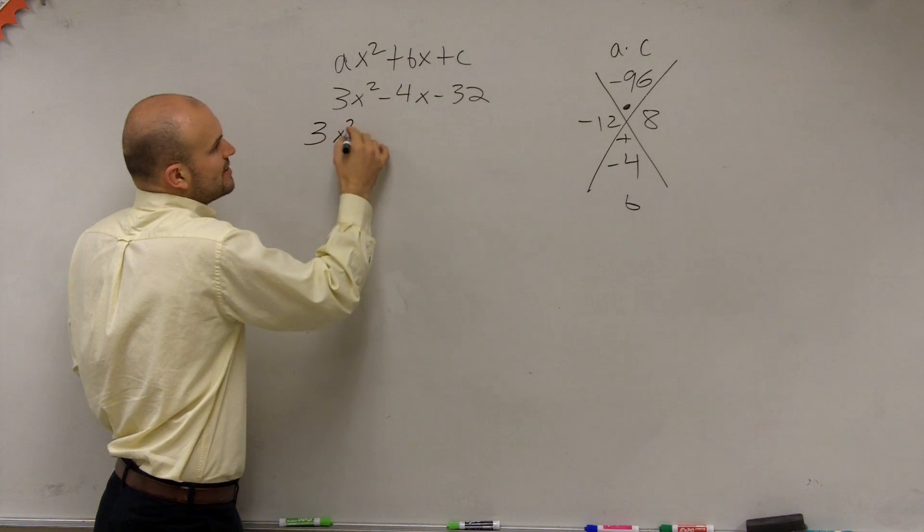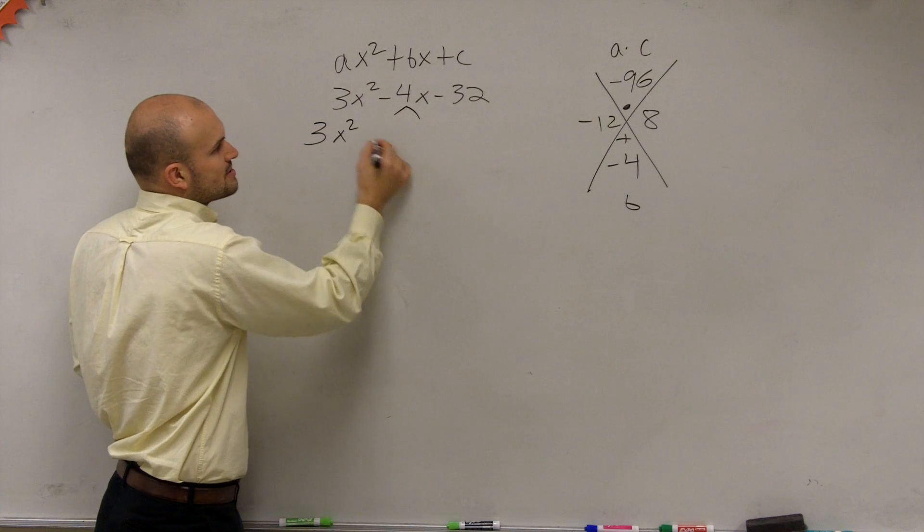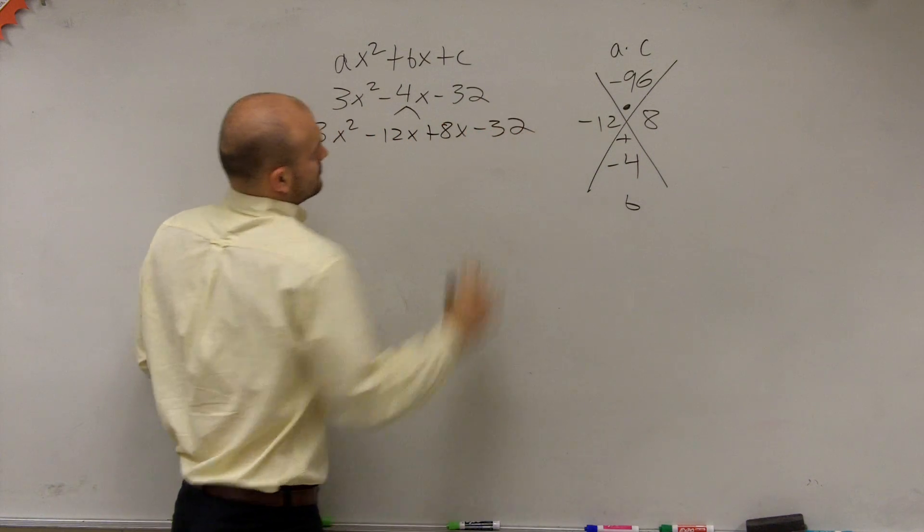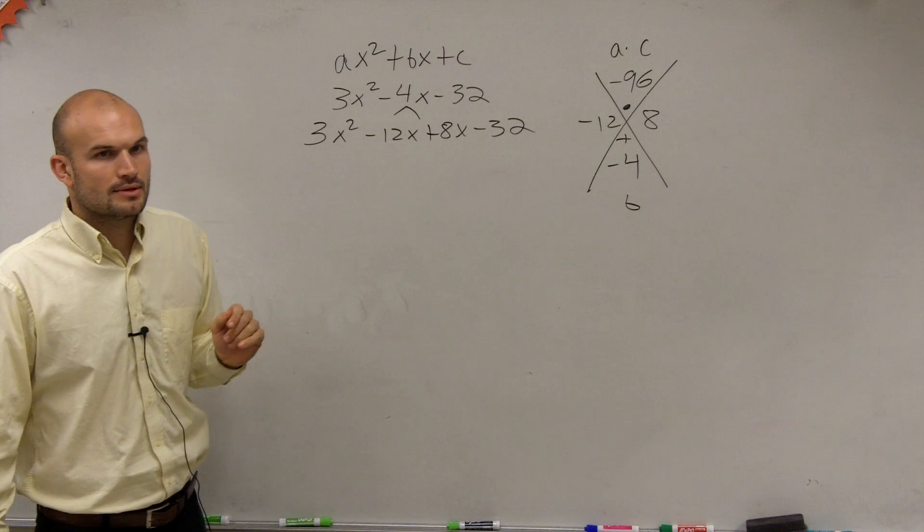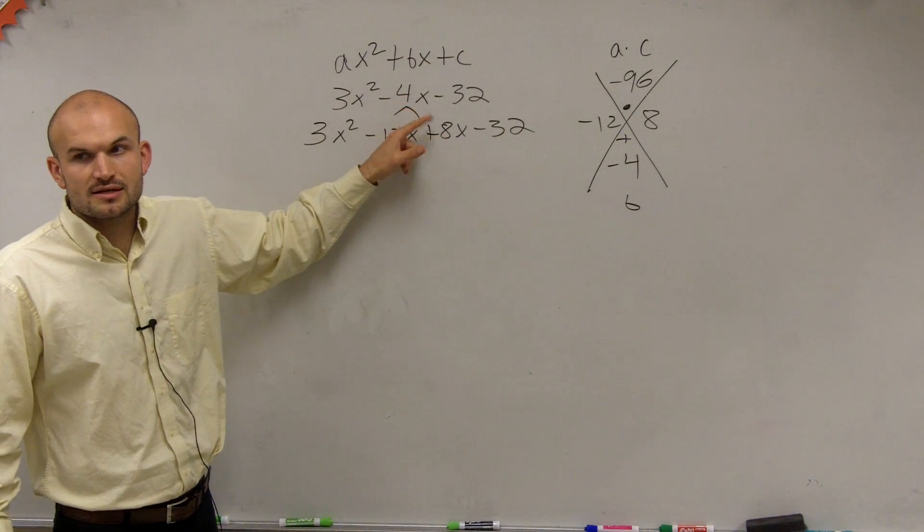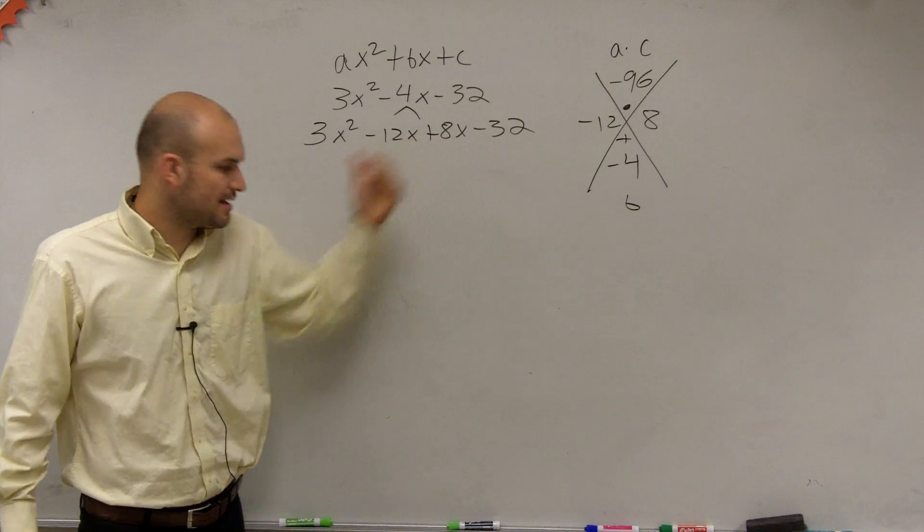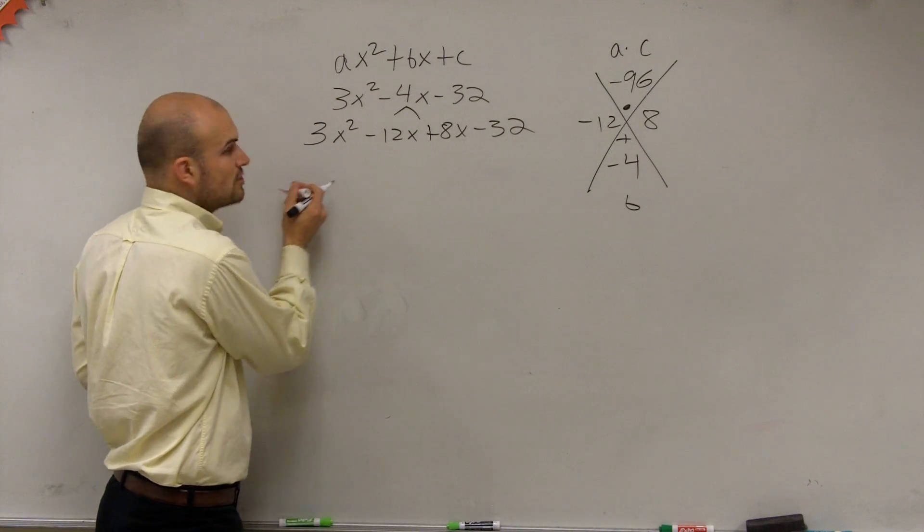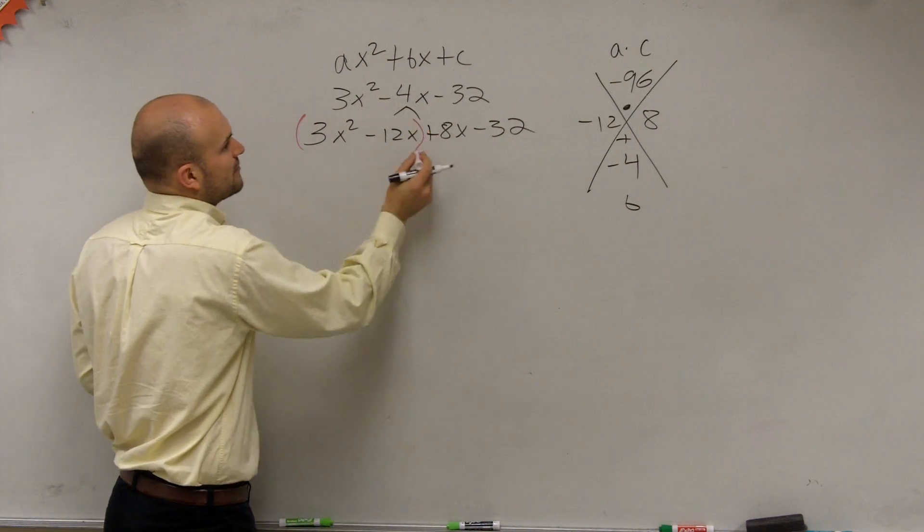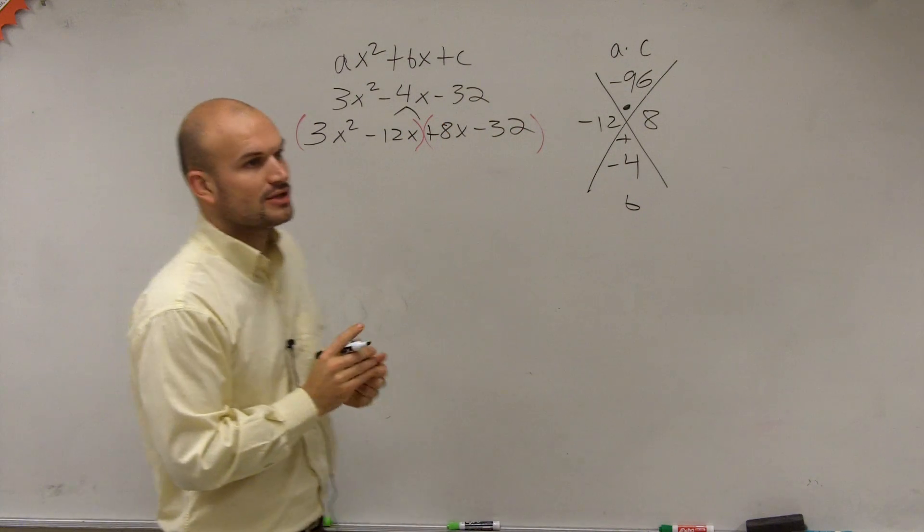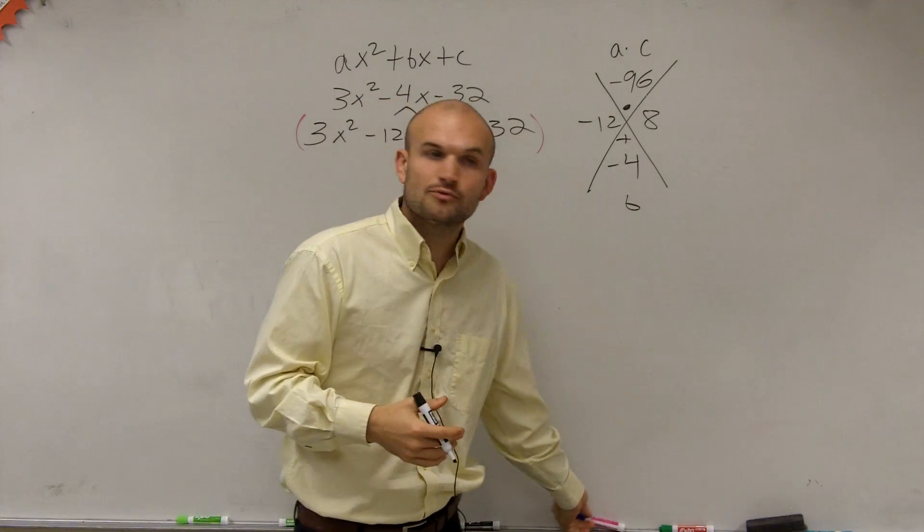What we need to do is rewrite them as our two middle terms. Do you guys notice how negative 12x plus 8x gives you negative 4x? So I'm just rewriting the problem. But I rewrite it, so now I have a polynomial with four terms. And to factor a polynomial with four terms, we factor by grouping, right? Whenever we look at four terms, we always want to think of grouping.